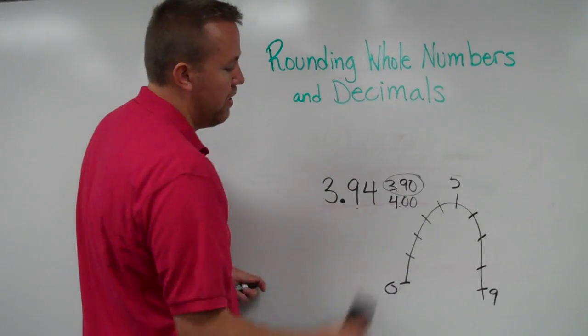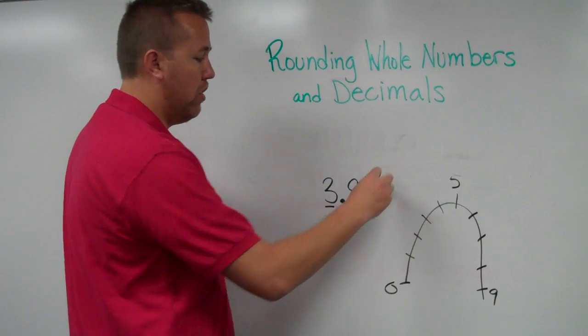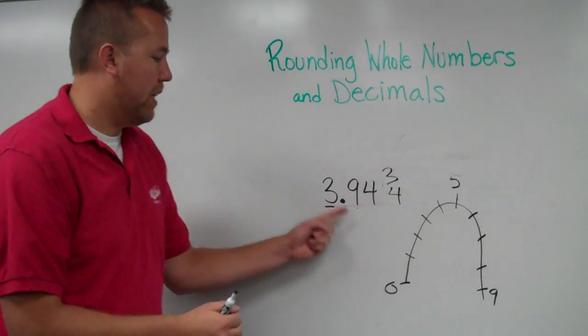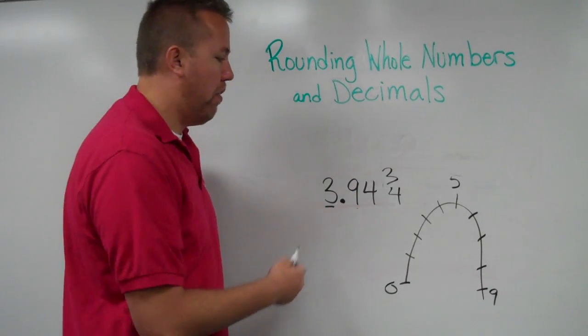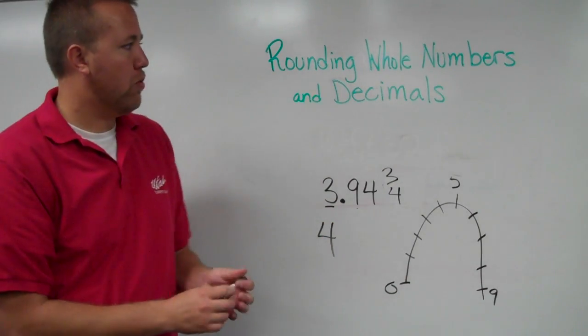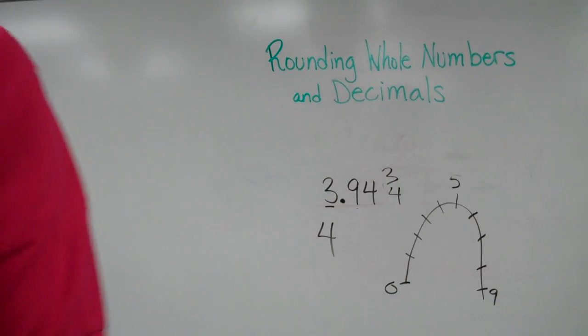Then, also rounding to the nearest whole number. Nearest whole number is either a three or a four. Because this digit, the one to the right, is higher than five, we round up to four. Okay, that is rounding whole numbers and decimals, which will help us in subsequent lessons.